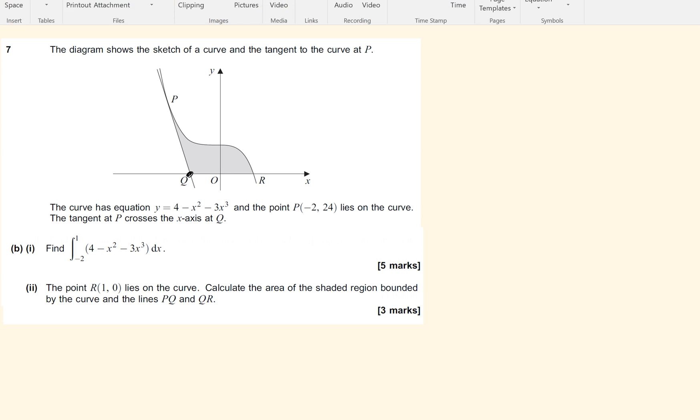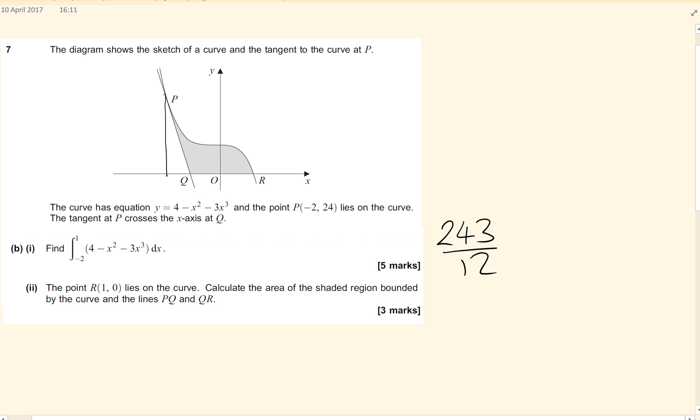We said the previous question was 243 twelfths, so that's all that shaded area there. What we're looking for is the point R lies at 0, 1. Calculate the area of the shaded region bounded by the curve and the lines. So the problem we have is that at the minute we have worked out the area all the way, including this part here, this fraction.